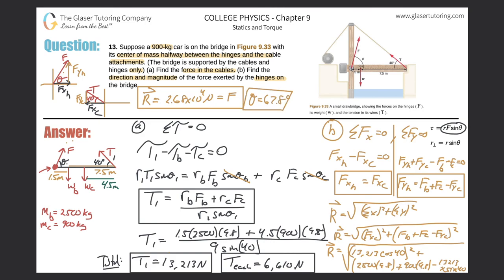The math on this one was a little tricky, but the concept wasn't too bad. Since we didn't know both the force vector and the angle at the hinge, we had to choose a different technique instead of the sum of torques equal to zero. We found the x and y components using the fact that all forces must balance. Then, knowing those two components, we used the Pythagorean theorem to find the resultant vector. Thanks for sticking in here — please subscribe and I'll see you in the next question.